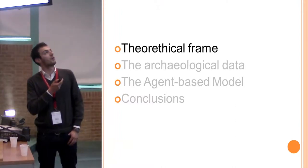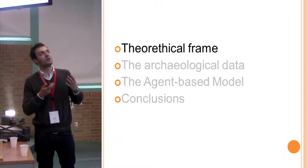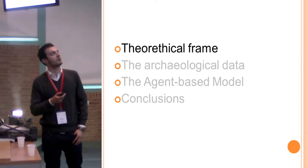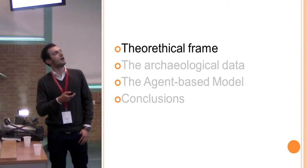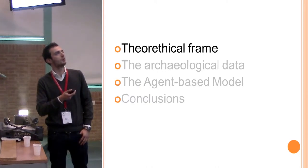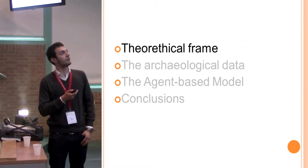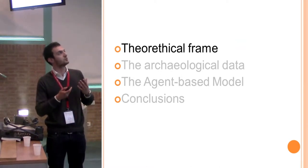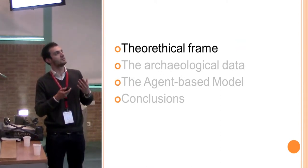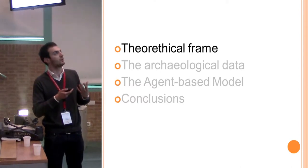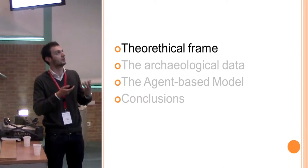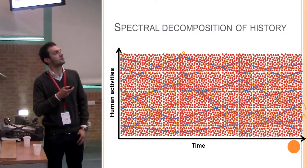I'm going to start with a theoretical frame about historical agent-based modeling in general. Then I will describe the archaeological data that I used, and then the functioning of the agent-based model and how I built it. I'm trying to explain why, in my opinion, agent-based models in historical modeling can be a powerful and useful instrument and can be used to better understand the past.